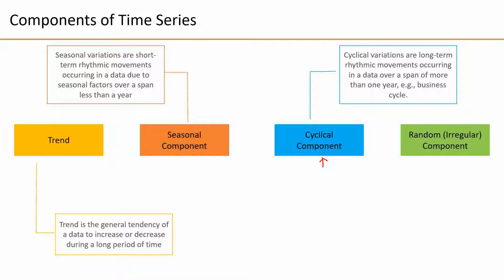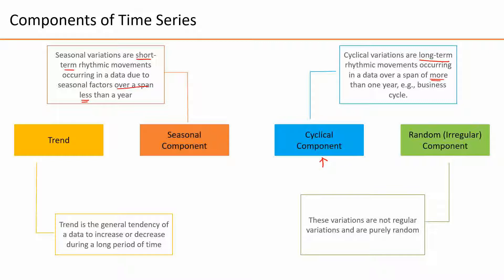The difference between seasonal and cyclical variations is that seasonal variations are short-term rhythmic movements observed over a span of less than a year, while cyclical variations are long-term rhythmic movements observed over a span of more than a year. Finally, random or irregular components have variations that are not regular and occur due to purely random reasons.